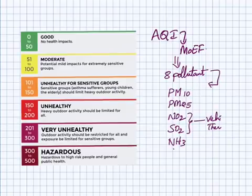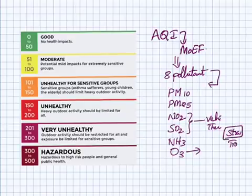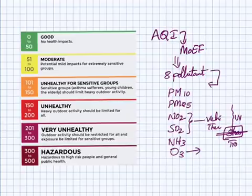We have ground-level ozone. Ozone is generally present in the stratosphere and troposphere. In the stratosphere, it is very useful because it acts as a shield against incoming UV radiations. But in the troposphere, it is a pollutant. Then comes carbon monoxide, and then lead.